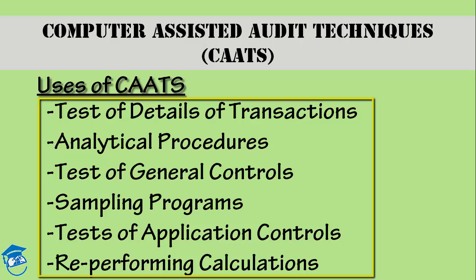For the test of detail of transactions and balances — for example, you use a software for recalculating interest on some loans, or you need to extract invoices over a certain value from computer records. In a manual system, that would be very, very difficult. But if you have computer systems in place, you can get these tests of detail of transactions for any minute detail on a sample basis anywhere you want through that computer system. That is why CATs are important.